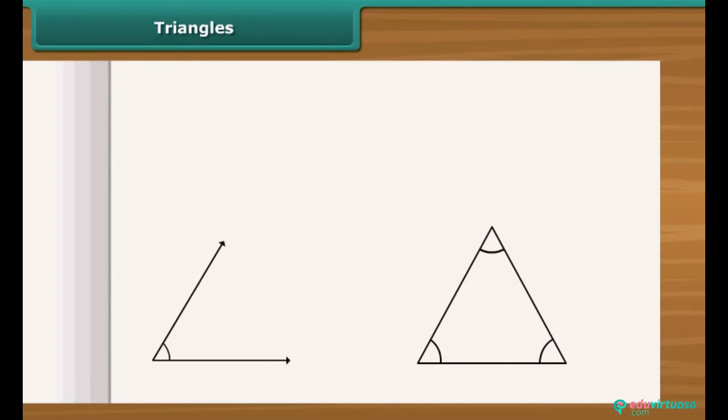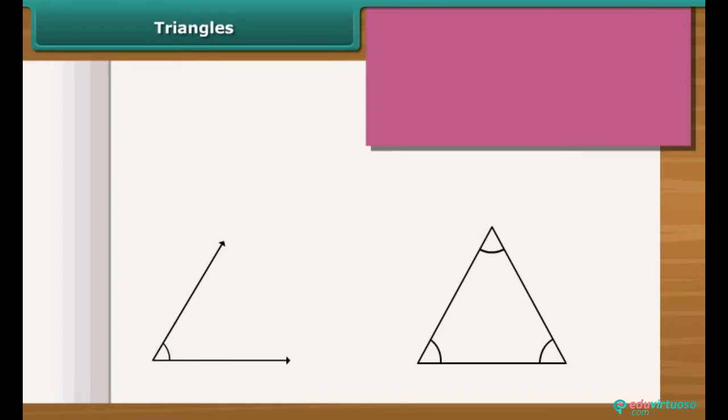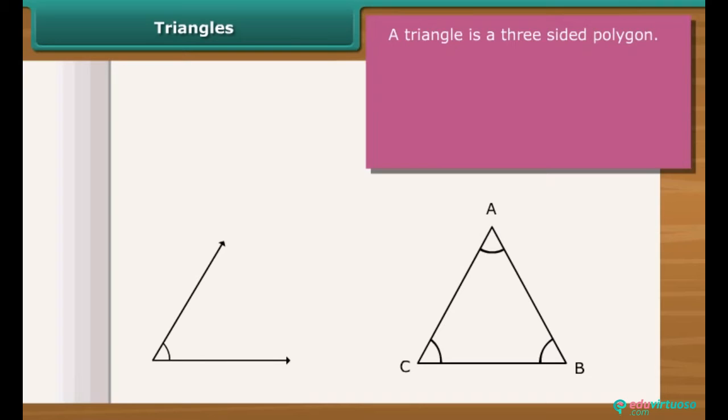An angle is not a closed figure. A closed figure with least number of sides is a triangle. A triangle has three sides, three vertices and three angles.